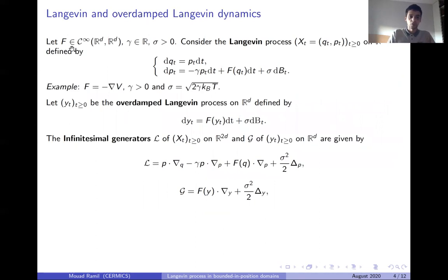Let us take F, a smooth function from Rd to Rd, a real parameter gamma and sigma positive. The Langevin process is defined as follows: the first component is the position of the process and the second is the velocity. So the time derivative of the position is the velocity, and the velocity follows an Ornstein-Uhlenbeck-like process. We know that if gamma goes to infinity, the law of the position of the Langevin process goes to the law of the overdamped Langevin process. We can also obtain the infinitesimal generators of both processes.